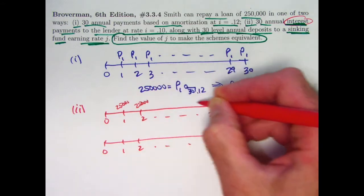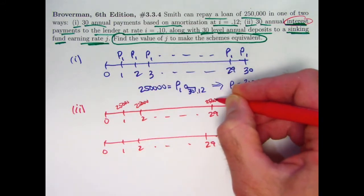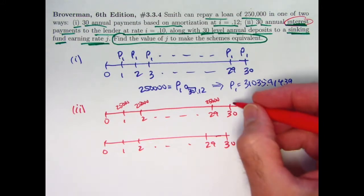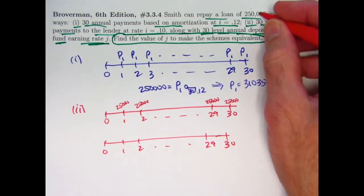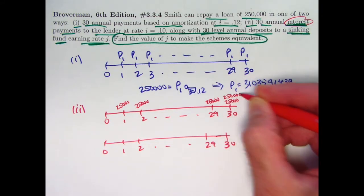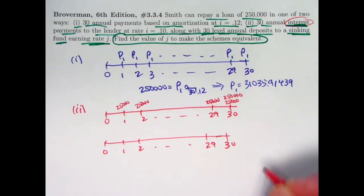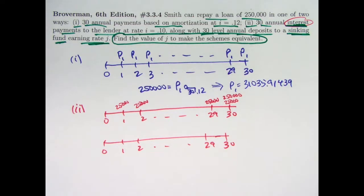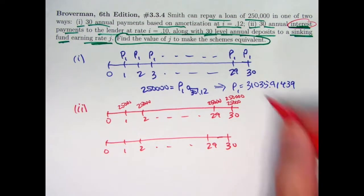Those are the payments to the lender for the first 29 payments. The last payment includes the $25,000 from interest, but also pays off the balance. Also pays $250,000. The last payment is really $275,000. But think of it as a sum of these two things.